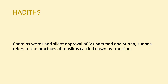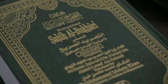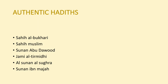There are other groups of texts called Hadith, which contain the words and silent approvals of Prophet Muhammad, and Sunnah, which refers to the practices of Muslims carried down by tradition. There are six Hadith recorded as authentic: Sahih al-Bukhari, Sahih Muslim, Sunan Abu Dawud, Jami al-Tirmidhi, Al-Sunan al-Sughra, and Sunan Ibn Majah.